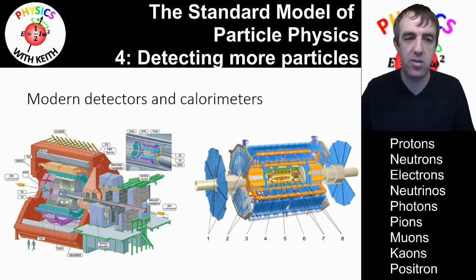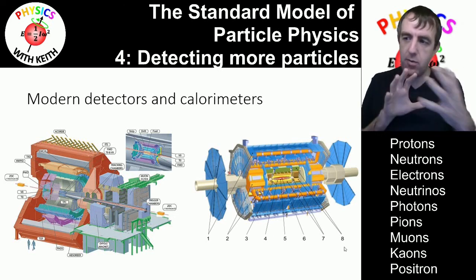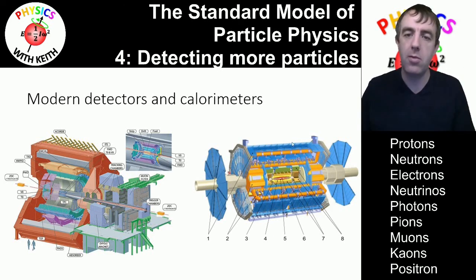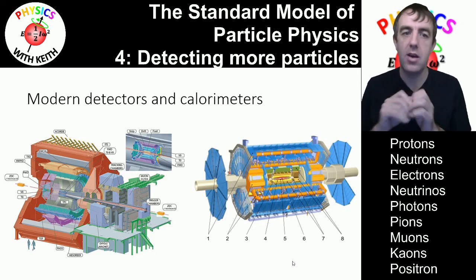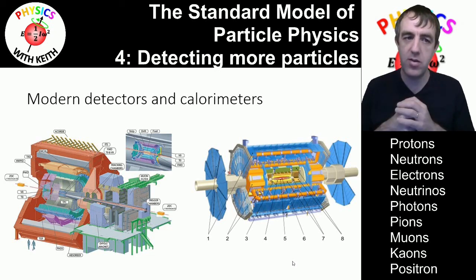Well, these are much more sophisticated calorimeters. They sort of work on the same principle where particles that are created by a collision in the centre here and then radiate out from that point are absorbed and we can measure the amount of energy that is absorbed. The middle parts of these detectors have parts very similar to those drift chambers which detect the path of the particles.